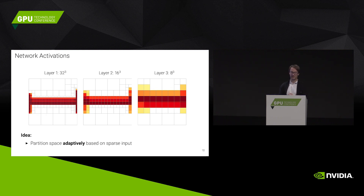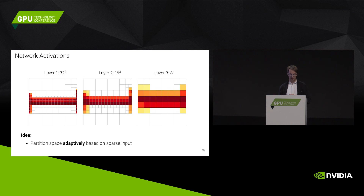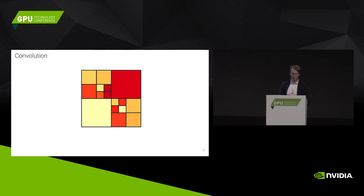What we do instead is partition adaptively. We use a technique called Octrees, used heavily in the graphics literature. We take the input and subdivide cells only where we have information, such that there are big cells far away from the surface and small cells close to the surface where we want to be more accurate. This is all derived from the input — we take the input mesh and tessellate accordingly. We have this representation, but we need to define all the standard ConvNet operations on it, so we cannot naively apply a standard framework — we define our own.